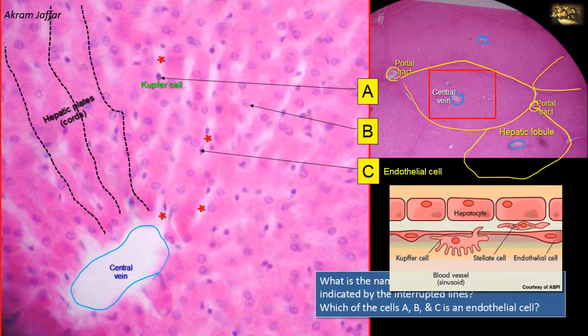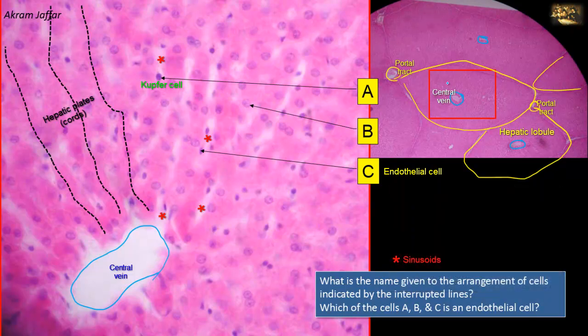Cell B is part of the cord, which lies between the sinusoids, so it is a hepatocyte. The hepatocytes are large polyhedral cells with a centrally located rounded nucleus, and the cytoplasm is darkly stained due to numerous organelles.